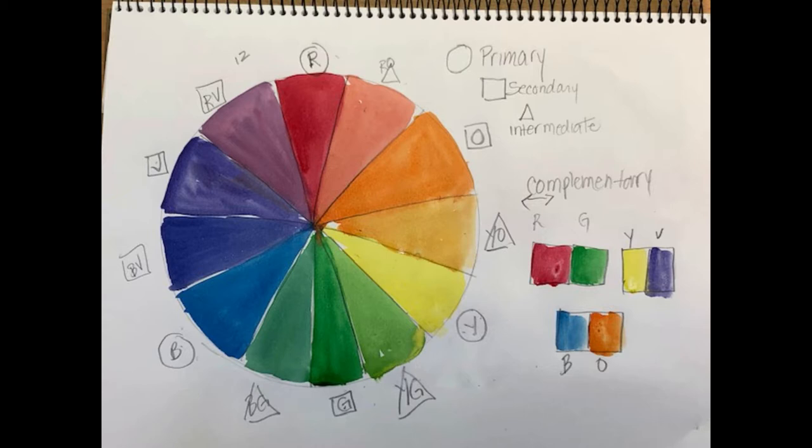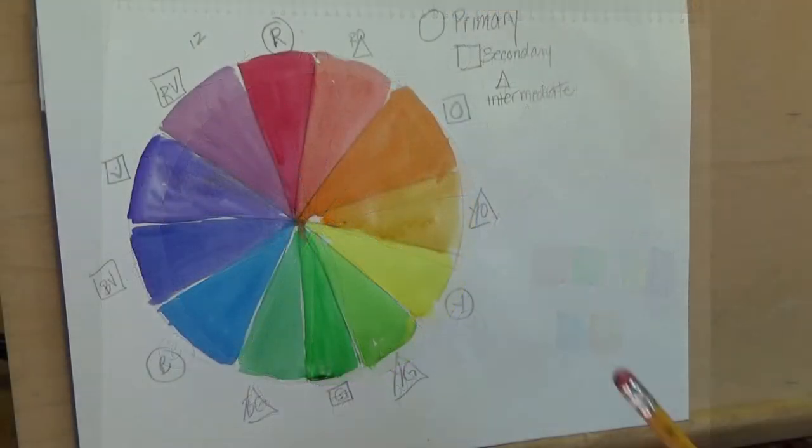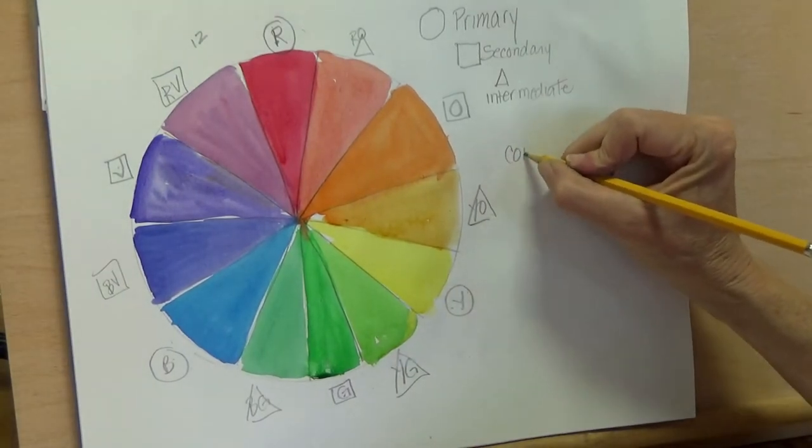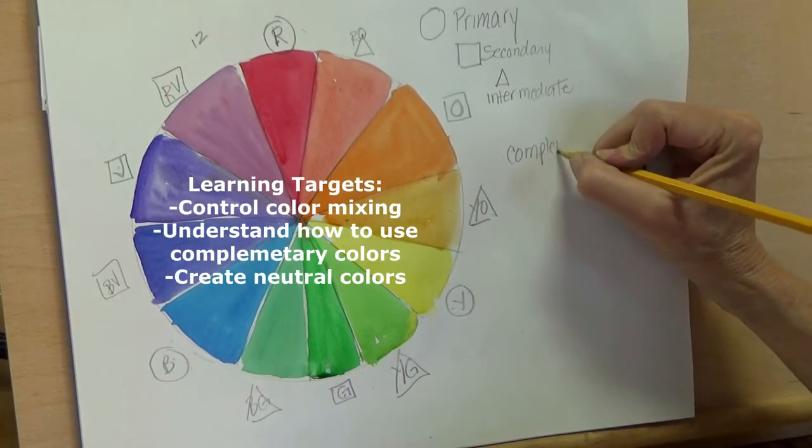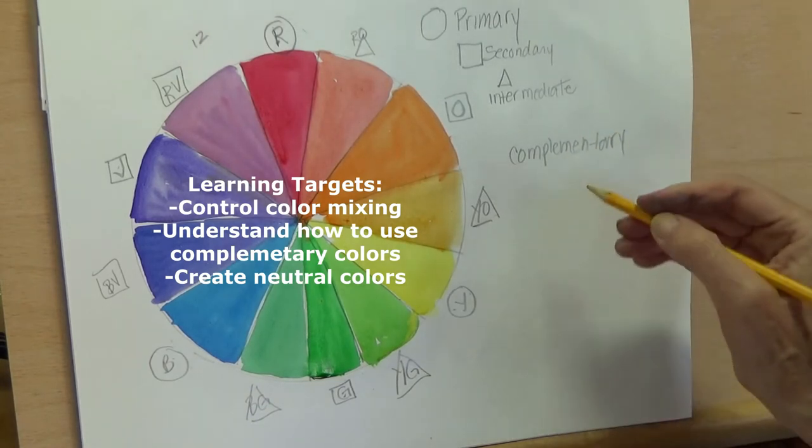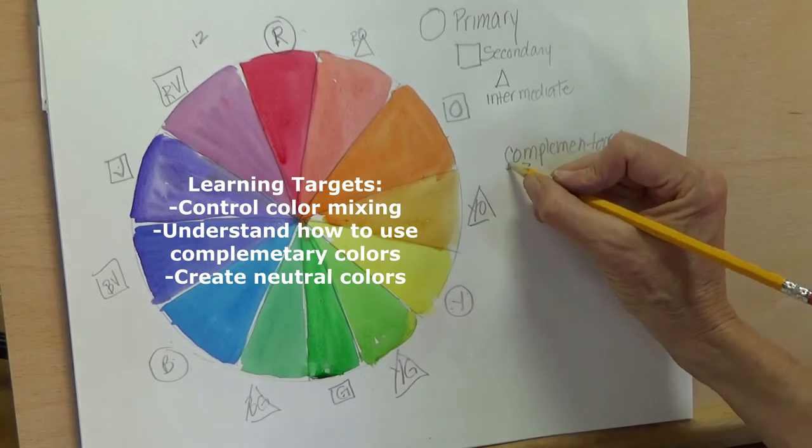Let's do a little more of an in-depth look at a color wheel. We looked at the primary colors, how to make the secondary colors and the intermediate colors. We're going to talk a little bit about complementary colors, look at controlling your color mixing, understanding how to use complementary colors and making neutral colors.